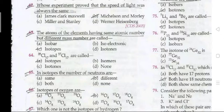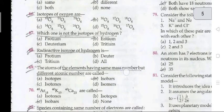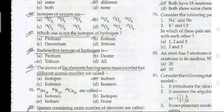Question 65: in isotopes, the number of neutrons are different. Question 66: isotopes of oxygen are ¹⁶O-8, ¹⁷O-8, and ¹⁸O-8. Question 67: which one is not an isotope of hydrogen?